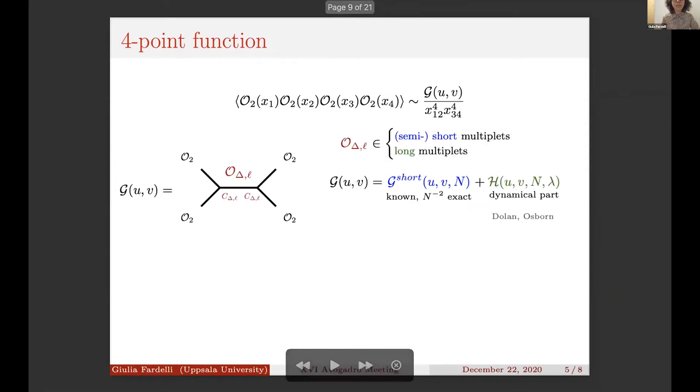G can be expanded in the OPE where the exchange operators are these O_{Δ,ℓ} that can be either protected or non-protected. The interesting thing is that we can completely disentangle the contributions from these two types of multiplets by writing G as G_short, which is a function only of short and semi-short multiplets—this is known exactly—and another part H which is more interesting and dynamical and carries dependence on λ and N, and this is made of long multiplets.